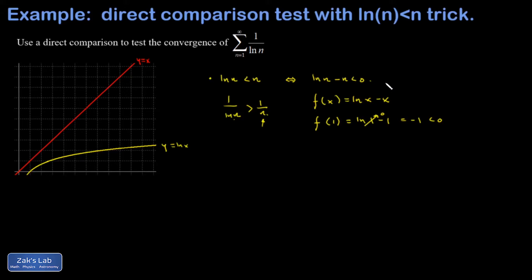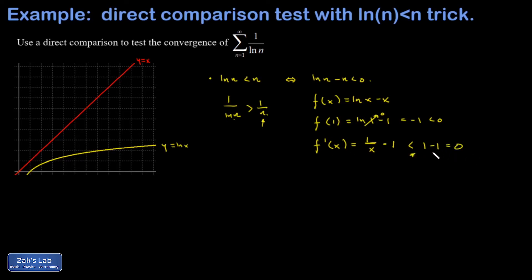Instead of looking at a sequence generated by integers, I'm now looking at a continuous function so I can talk about the derivative. My goal is to find that the derivative is negative, which would mean this function starts out negative and then gets more negative as x gets larger. If x is bigger than one, then one over x is going to be less than one, and that means my derivative is indeed less than zero. So this function starts out at x equals one being less than zero, and after that it has a negative slope, meaning it's always going to be negative from here on out.